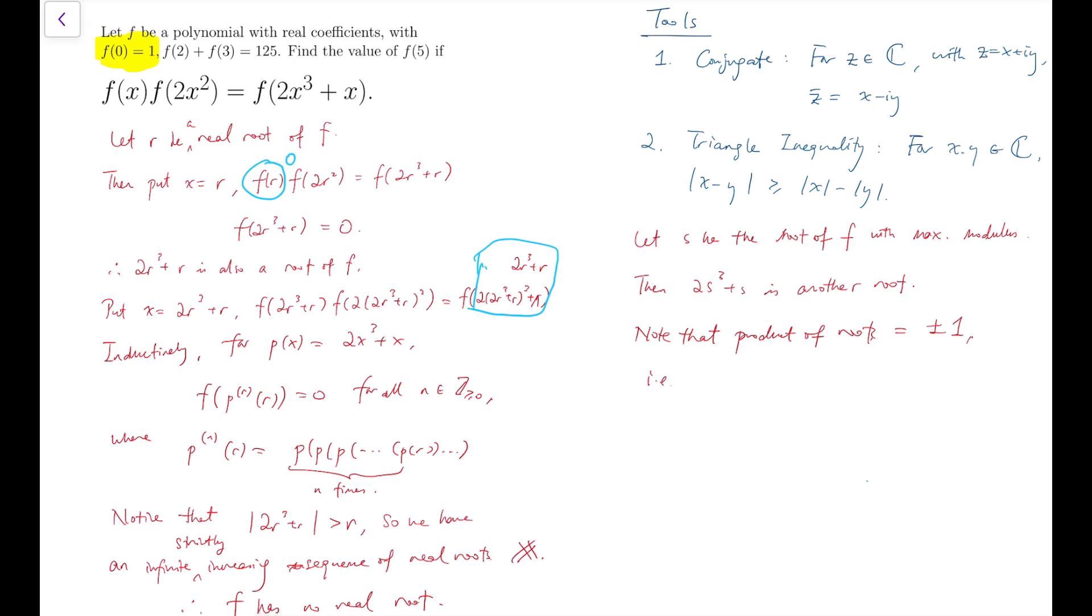Which means product of the modulus of the roots is equal to 1. Now we have the product of all the roots to have modulus 1. So you can imagine that some of them has to be larger than 1 and some of them has to be smaller than 1. So it's natural to assume that this s has modulus to be greater than 1.